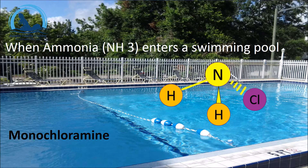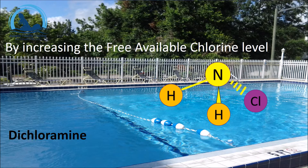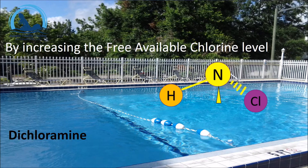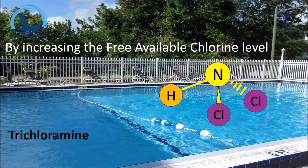If we were to add a little bit more chlorine to the water, we would force the change from monochloramine to dichloramine, again by replacing one of the hydrogen molecules in the ammonia. If we added even more chlorine to the water, we would force the change from dichloramine to trichloramine,